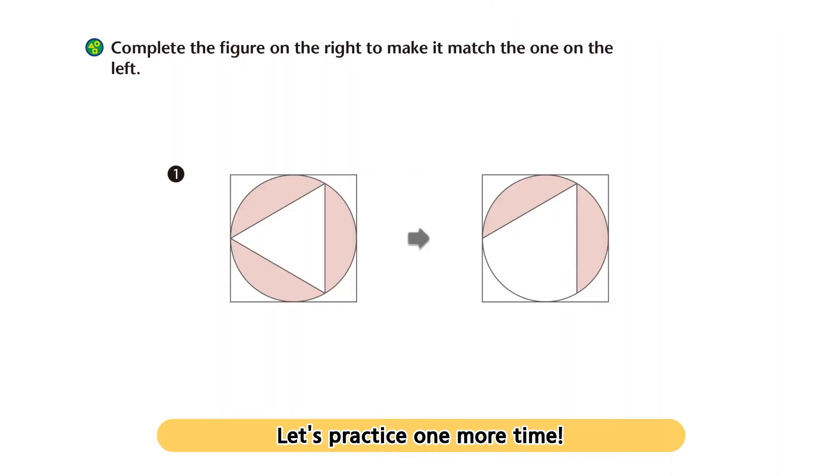Let's practice one more time. What is the difference between the figures on the right and the left? The figure on the left has a triangle inside the circle. The figure on the right has the same circle shape, but the triangle is not completed yet. So, let's make them the same.